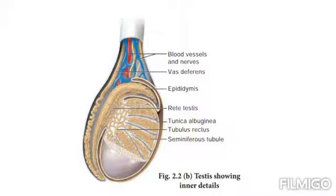In the first stage of spermatogenesis, the spermatogonia migrate along with the Sertoli cells towards the central lumen of the seminiferous tubule and become modified and enlarged to form primary spermatocytes, which are diploid with 23 pairs of chromosomes — that is, totally 46 chromosomes.